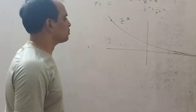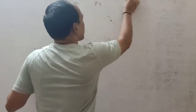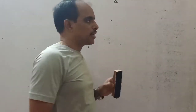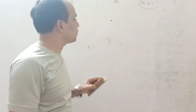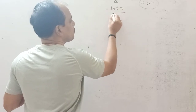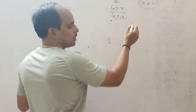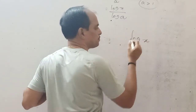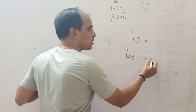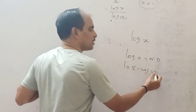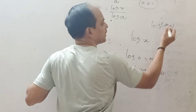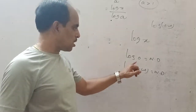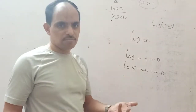Now let us draw the graph of log x. y = log_a(x) where a > 1. log_a(x) = log x / log a. Important points: log of 0 is not defined, log of a negative number is not defined — log x is only defined for positive x.